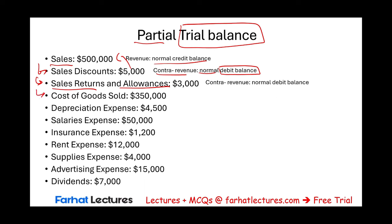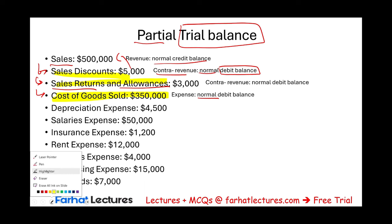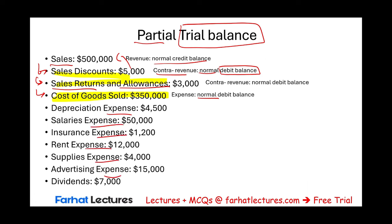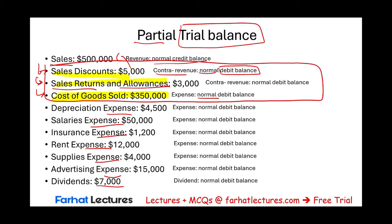Cost of goods sold is an expense account, and expenses have a normal debit balance. This is a new account introduced when we talked about merchandising operations — sales discount, sales returns and allowances, and cost of goods sold. The remainder of the accounts are expenses, and all expenses will have a debit balance. Dividends will also have a debit balance. I want to emphasize those three new accounts and go through the closing journal entries to make you more comfortable with this.